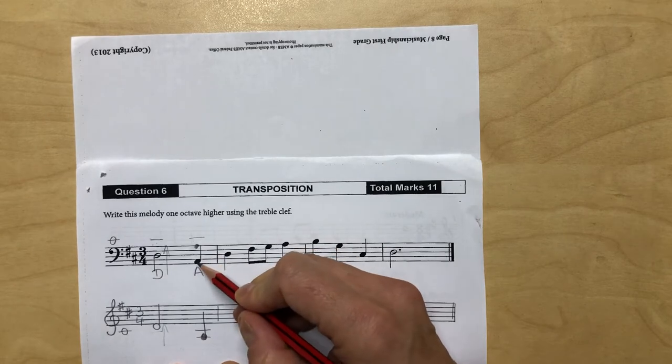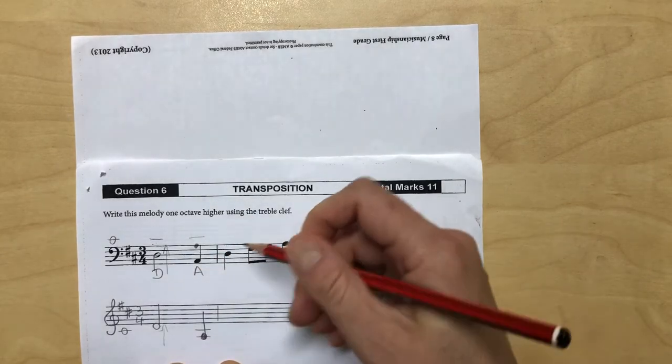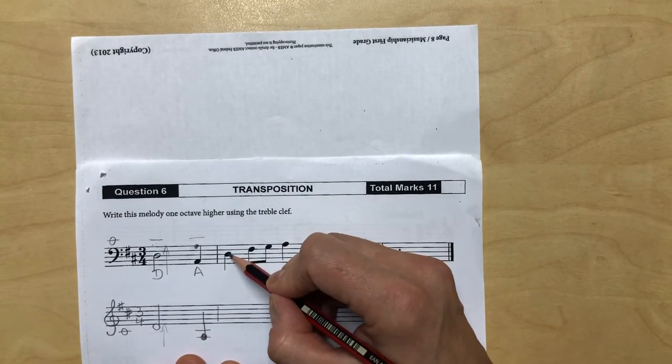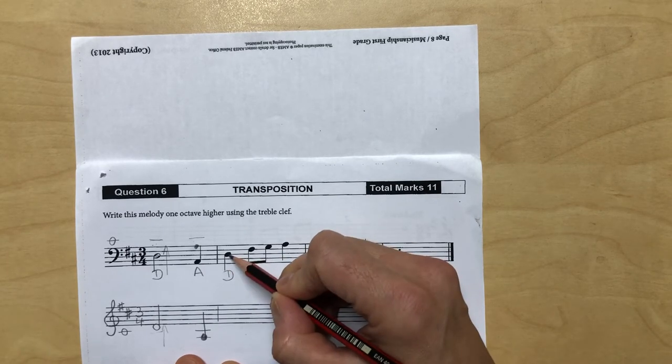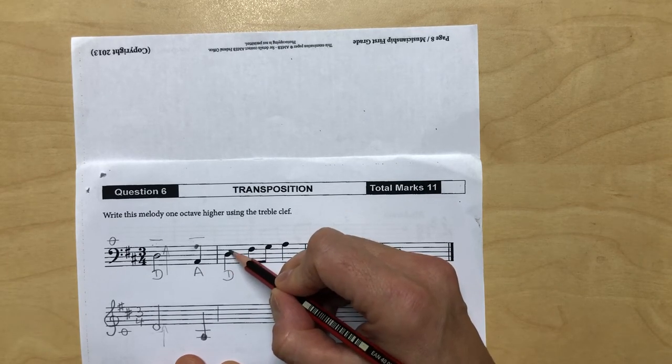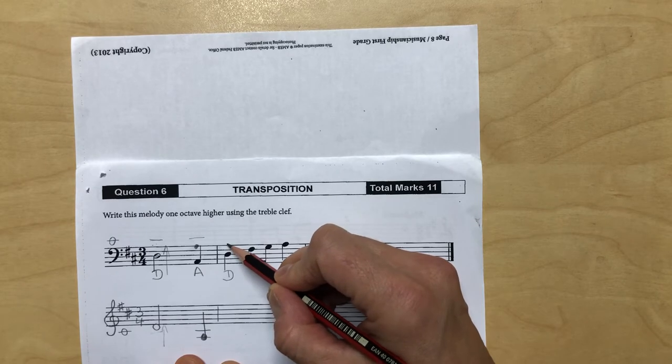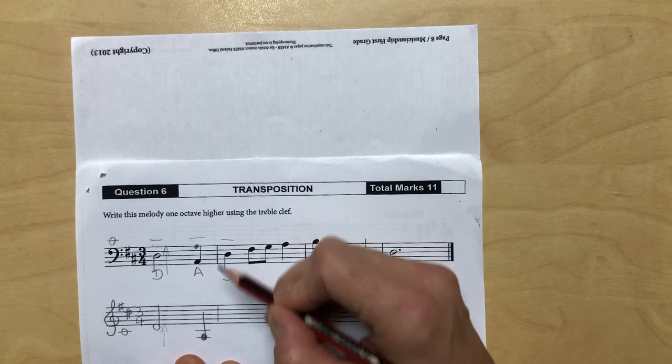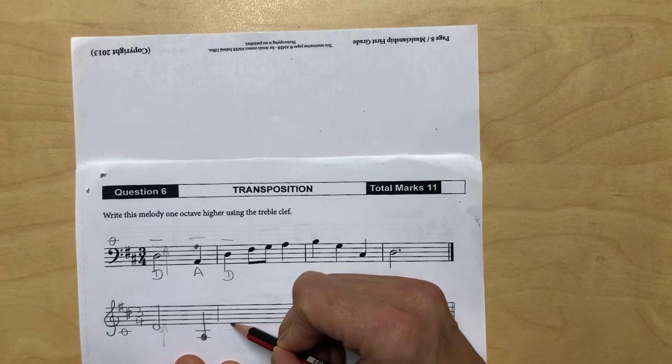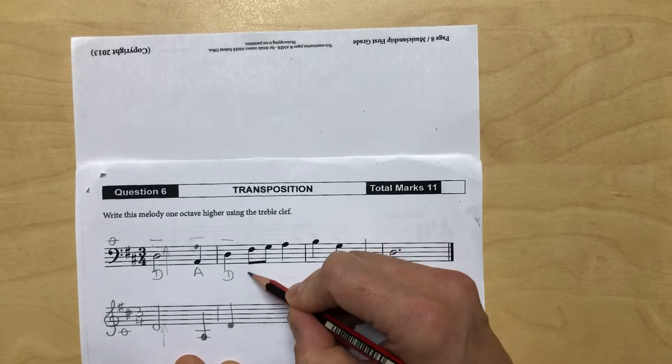Next note, this is a D. We've just done this one before, we'll do it again. D, E, F, G, A, B, middle C, middle C, D. This note is F.